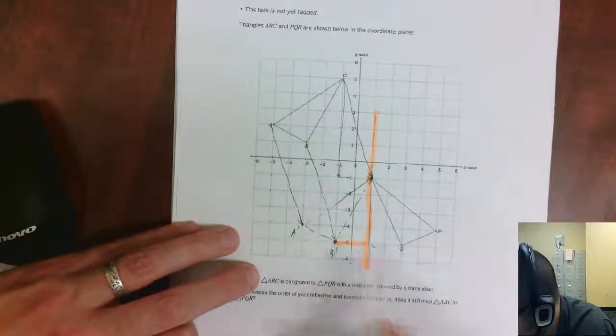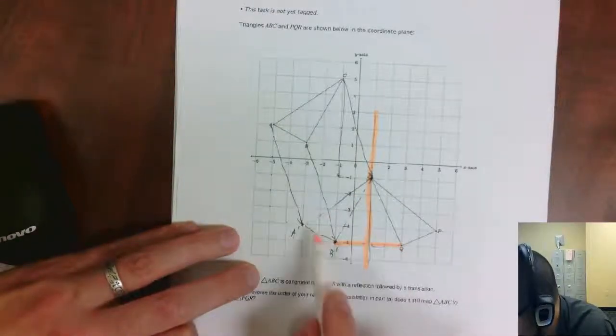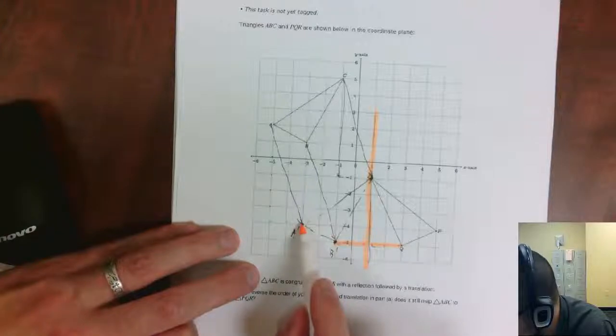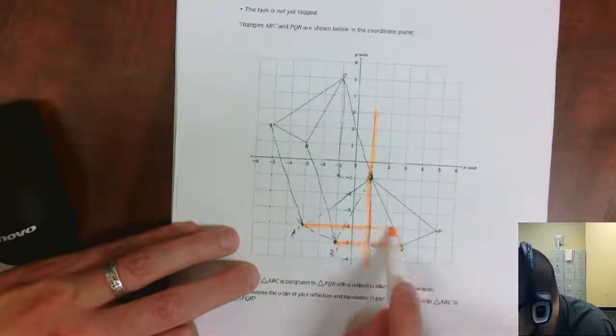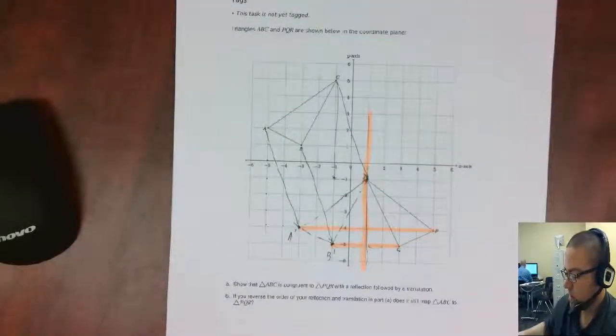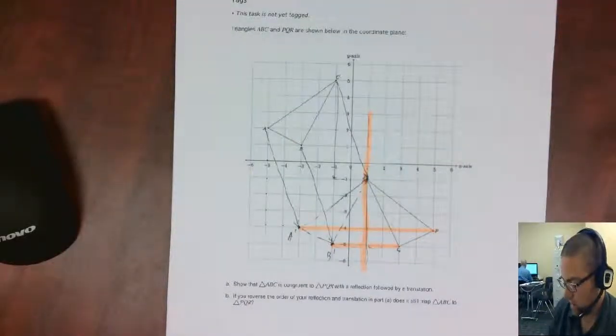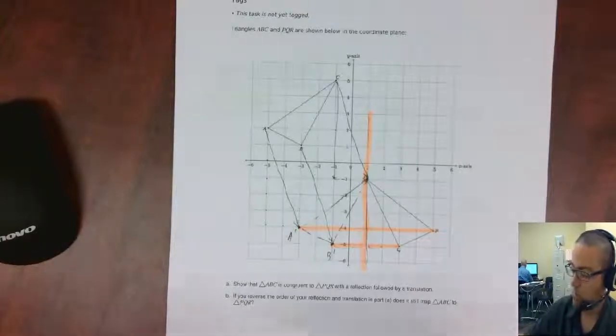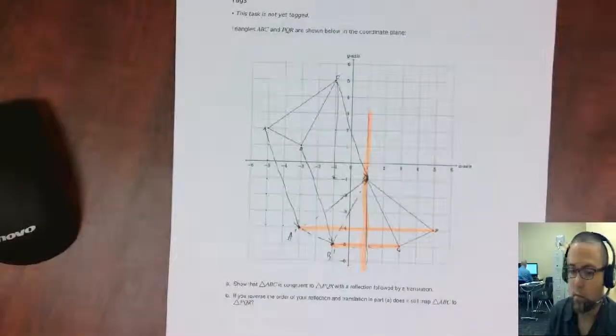So it goes 2 away there, so it's 2 over there. And it goes 4 here, so 4 over there to get to P. And then 0 and 0. So it turns out that I could have done it in either order. I could reflect and translate or translate and reflect.